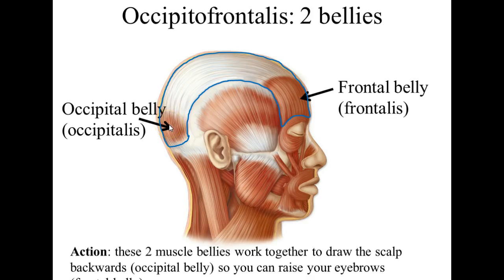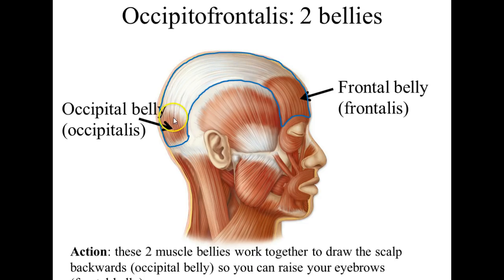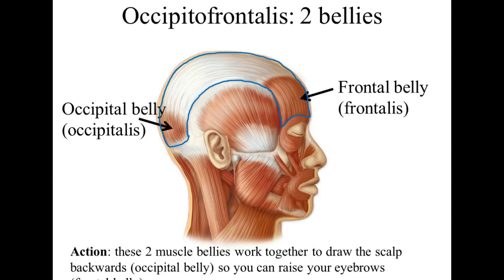The action of this muscle is that the frontal belly helps raise the eyebrows. You might wonder why we need the occipital belly, but the occipital belly helps to draw the rest of the scalp backwards so that you can raise your eyebrows. The two muscle bellies work together to draw the scalp backwards, which is the occipital belly's job, so you can raise the eyebrows, which is the frontal belly's job. So the occipital frontalis causes you to raise your eyebrows.